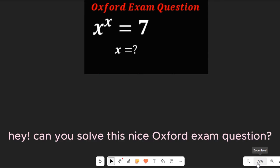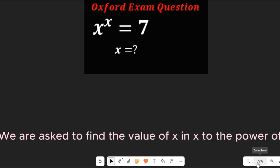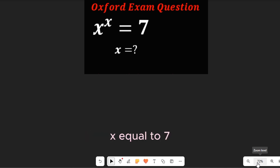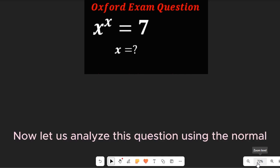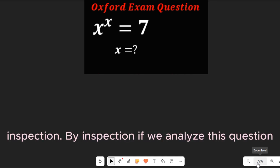Can you solve this nice Oxford exam question? We are asked to find the value of x in x to the power of x equal to 7. Let's analyze this question using the normal method of inspection.